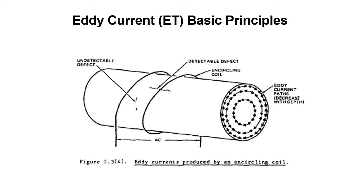Figure 2-3-4 shows an encircling coil installed around a rod. Here, Eddy Currents flow in the same direction as the current flow in the coil, i.e., around the circumference of the rod. Thus, the encircling coil is especially adapted to locating those discontinuities that are parallel to the length of the rod. The Eddy Current induced by the internal coil will be the same as the encircling coil, except the Eddy Current will be concentrated on the inner surface and not the outer surface.